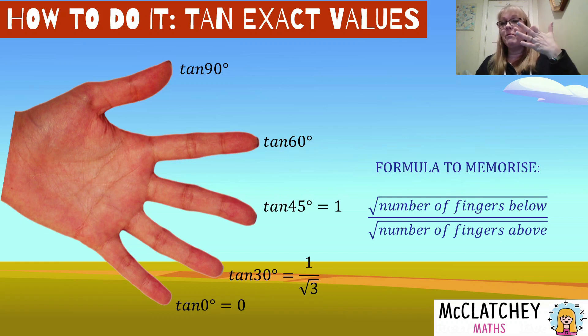So tan 60, I'm going to hold in my pointer finger this time. The number of fingers below is three. So it's going to be the square root of three over fingers above, which is one. So it's going to be square root of three over square root of one. And we know that square root of one is just one. So it's just going to be root three.